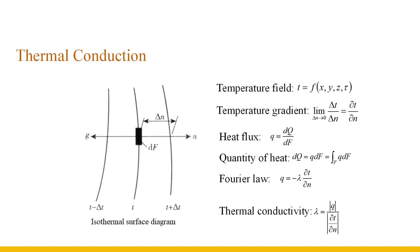A time-varying temperature field is an unstable temperature field, denoted by T = f(x, y, z, tau). A temperature field that does not change with time is a stable temperature field, denoted by T = f(x, y, z). When the temperature only changes along the x-axis, it is a one-dimensional stable temperature field, denoted by T = f(x). When the temperature varies along the x and y-axis, it is a two-dimensional stable temperature field, denoted by T = f(x, y).